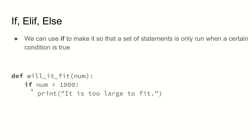If the num passed in was 2,000, then our if statement would see that 2,000 is greater than 1,000, and it would print 'it is too large to fit.' If num was 5, it would see that 5 is not greater than 1,000, and it would skip the print statement and execute any statements below it that are not inside the body of the if statement. Similar to function definitions, the body of the if statement is whatever is just below it and indented. If we stop indenting, that code is not part of the if statement.